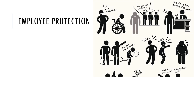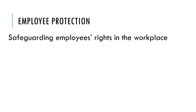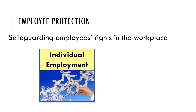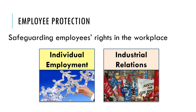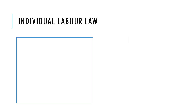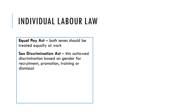Let's move on to employee protection law. This is about safeguarding employees' rights in the workplace, and we can break it down into individual employment law and industrial relations law. Countries will typically have legislation about the workers within the business. For example, the Equal Pay Act means both genders should be treated equally at work. The Sex Discrimination Act means people can't be discriminated against based on gender for recruitment, promotion, training, or dismissal. It's also illegal to discriminate based on colour — that's the Race Relations Act.